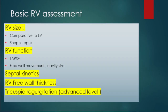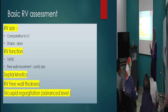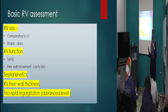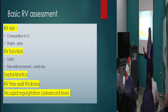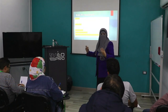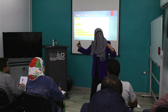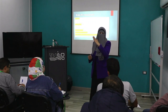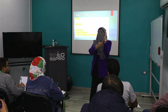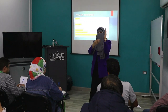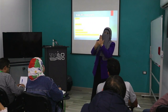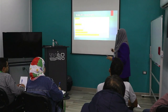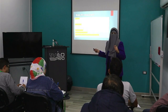We can assess RV function by measuring TAPSE and assessing free wall movement or cavity size. We also assess septal kinetics, because the septum is the shared part between the LV and RV. The RV is a low-pressure compartment and the LV is high pressure. If the RV fails, pressure in the RV will rise and the septal kinetics will change — the septum will be pushed toward the LV. We also assess tricuspid regurgitation when evaluating pulmonary embolism.